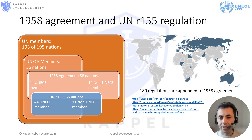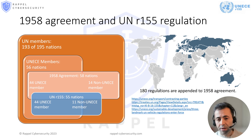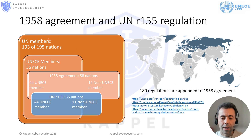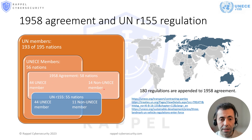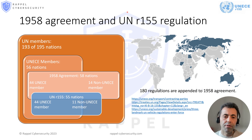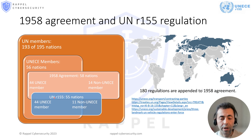On the slide, you might see the 1958 agreement map on the right and the Venn diagram on the left, showing the number of nations who adopted UNR 155. At the top of the Venn diagram are United Nations member states, covering almost the entire world — 193 out of 195. Under UN, there are 56 UNECE members. The ones who have adopted the 1958 agreement is 44. On the other hand, there are 14 non-UNECE nations who have adopted this agreement. If you come to UNR 155, the number drops to 55, as three non-UNECE member states who signed the 1958 agreement did not adopt UNR 155.